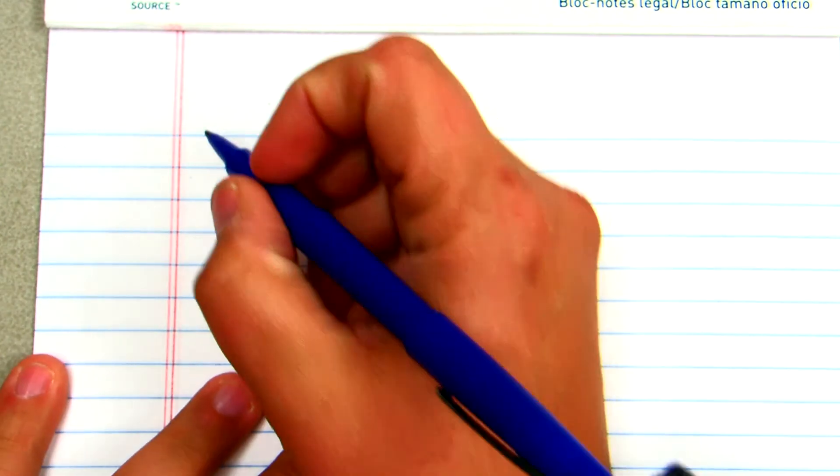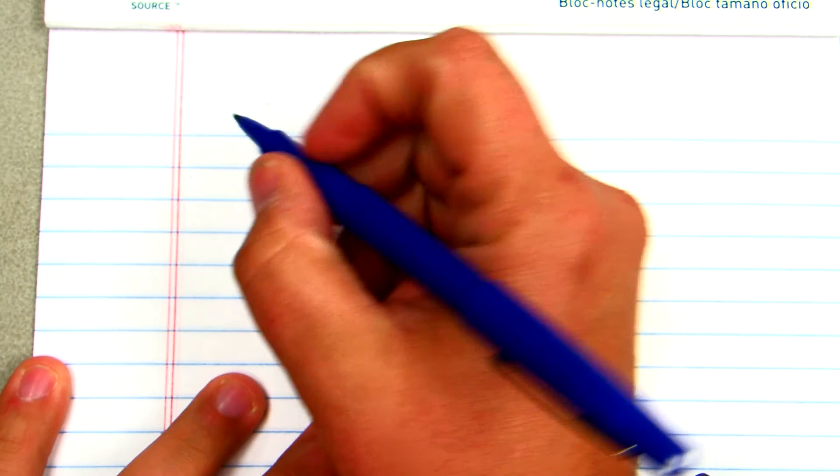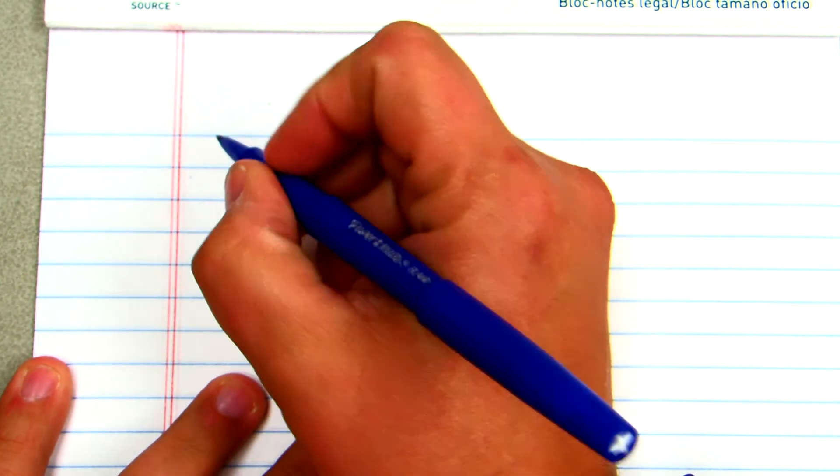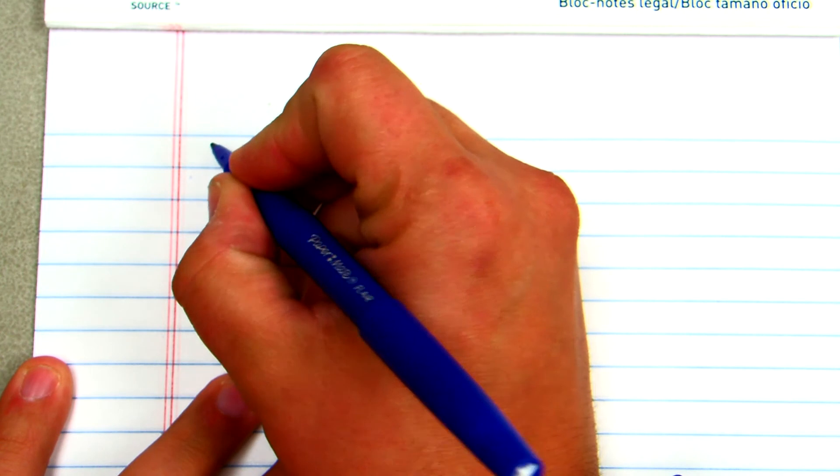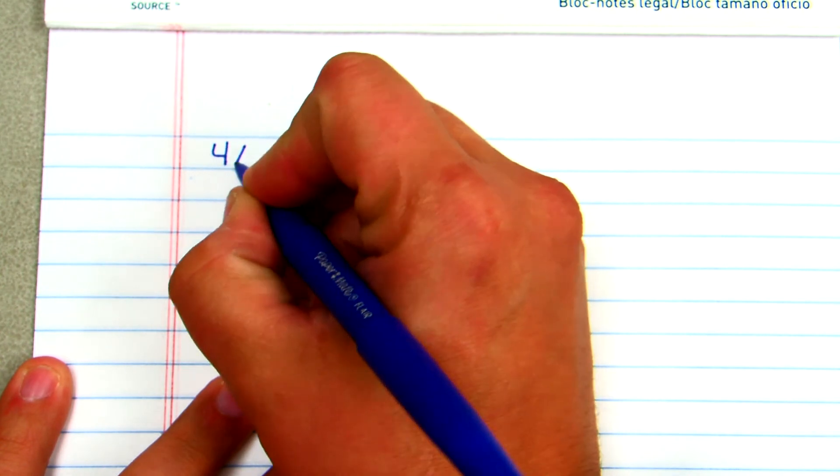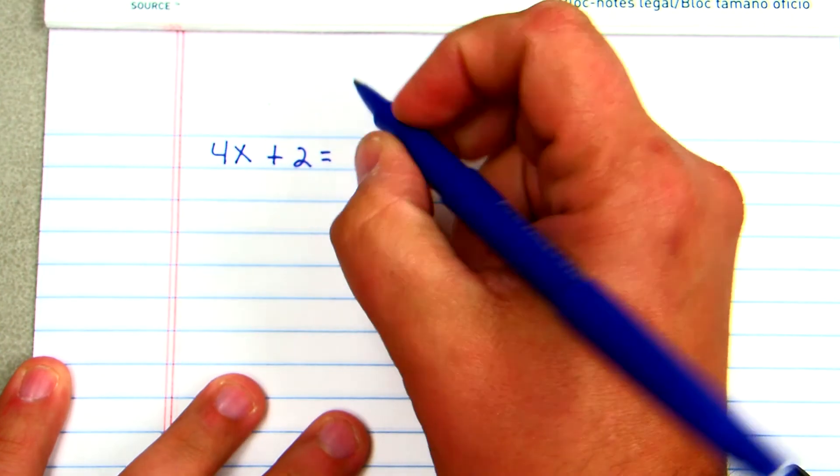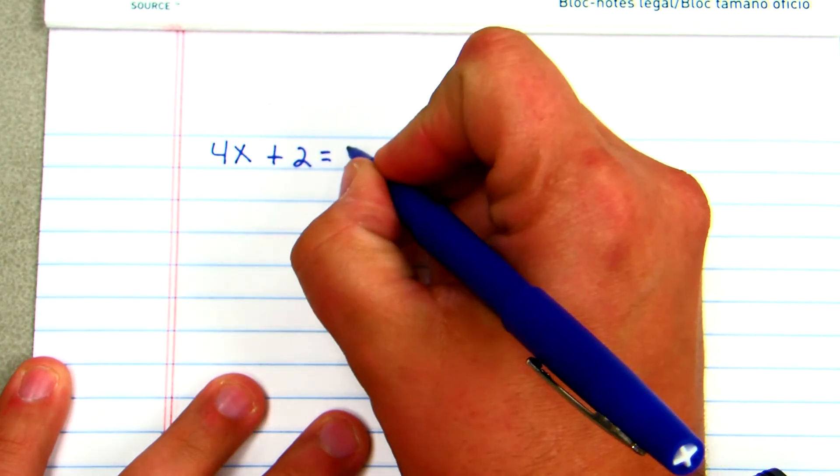First and foremost would be the two-step equation that we've been solving. You can have a variable on both sides. I'll start off with just a regular two-step equation. Let's say we have 4x plus 2 equals 14.